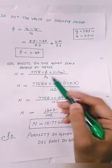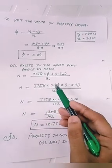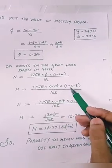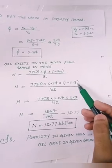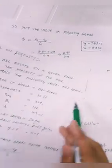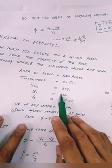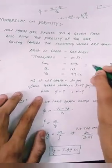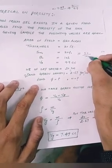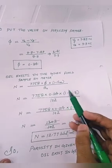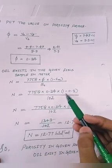Equals 7758 into, put the value on porosity, 0.24, into 1 minus connate water saturation minus 0.3. So 0.3, this is connate water saturation equals 30%. So percentage equals 30%, so we can write 0.3.